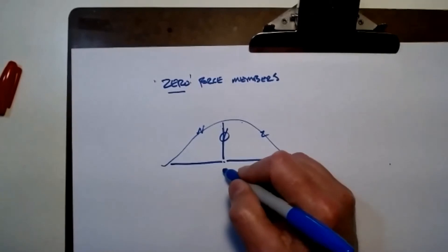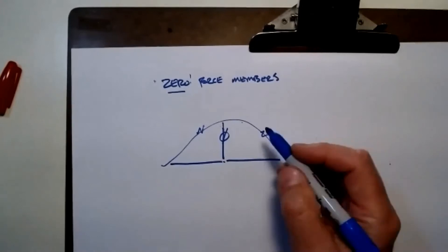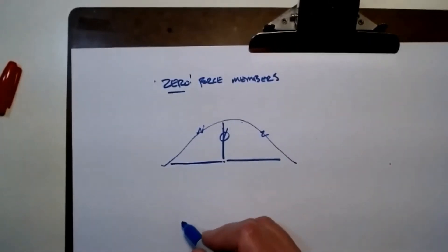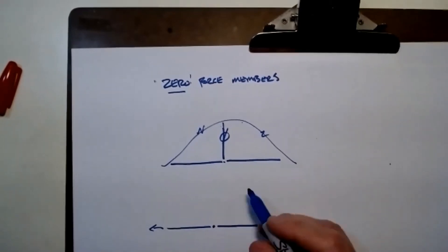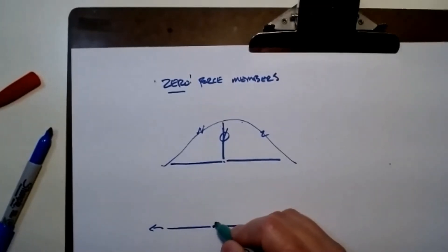Now that's altogether different if I apply a load here because now I need this member to do something. Think about it from the standpoint of if I have a member and another member and I pull on these, if I don't have a load being applied at this joint but I have a member here, there's nothing for this member to do because the force has a line of action and a straight line between those.